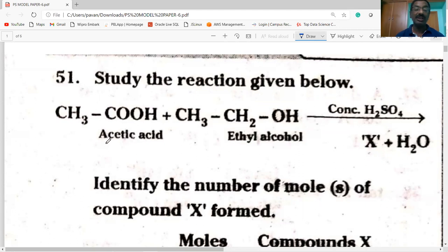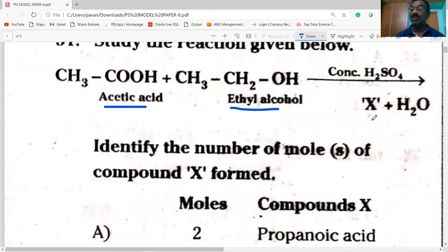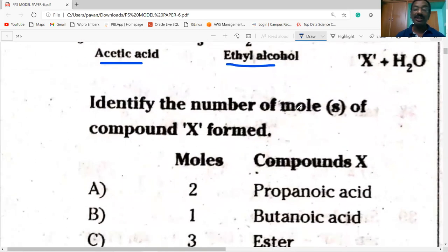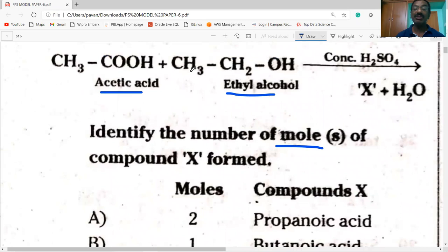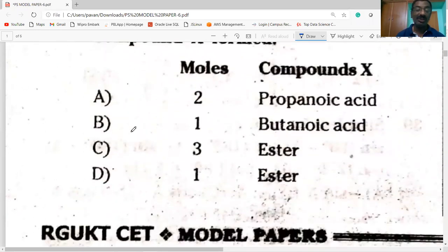Study the reaction given below. Acetic acid plus ethyl alcohol react in presence of concentrated sulfuric acid. Acetic acid and alcohol react to form compound X plus water. You know that it is the reaction known as esterification reaction. One mole of acetic acid reacts with one mole of ethyl alcohol, hence one mole of ester is formed. One mole of ethyl acetate is formed. So option D is correct.